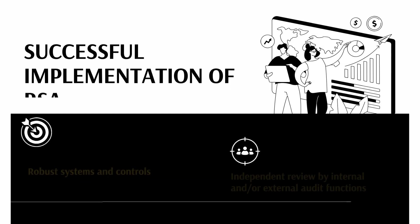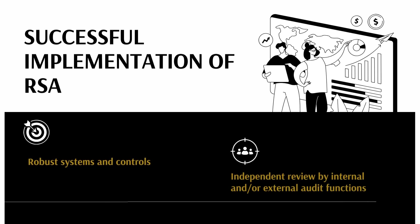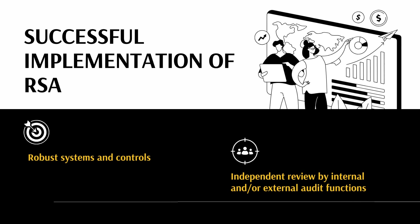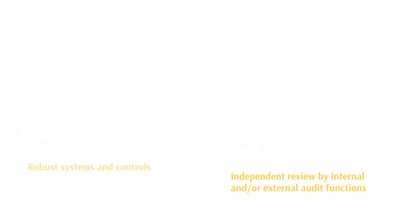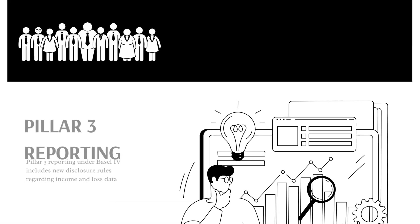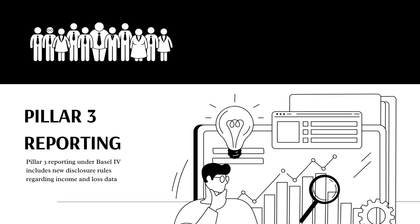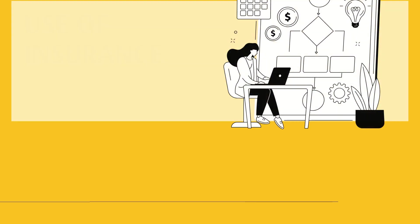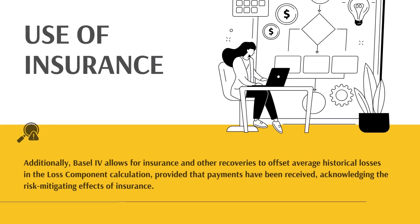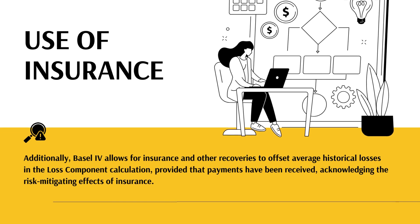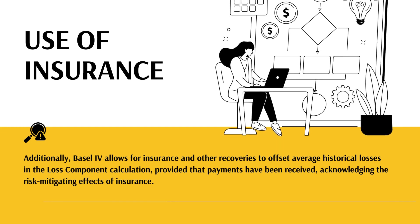Successful implementation of the RSA requires robust systems and controls, subject to independent review by internal and/or external audit functions. Pillar 3 reporting under Basel IV includes new disclosure rules regarding income and loss data. Additionally, Basel IV allows for insurance and other recoveries to offset average historical losses in the loss component calculation, provided that payments have been received, acknowledging the risk-mitigating effects of insurance.